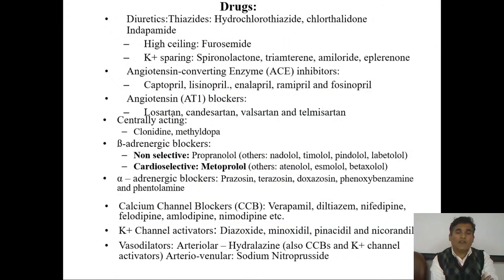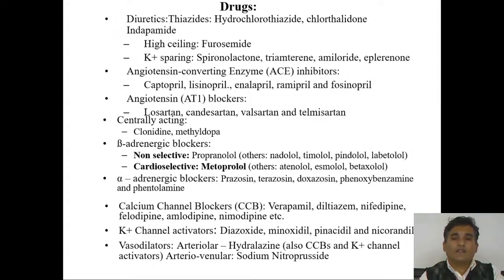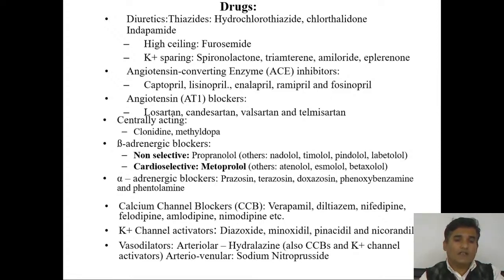Classification of antihypertensive drugs: Diuretics — thiazides (hydrochlorothiazide, chlorthalidone, indapamide), high-ceiling diuretics (furosemide), potassium-sparing diuretics (spironolactone, triamterene, amiloride). ACE inhibitors — captopril, enalapril, lisinopril, ramipril, fosinopril. Angiotensin receptor blockers — losartan, candesartan, valsartan, telmisartan. Centrally acting drugs — clonidine, methyldopa. Beta blockers — non-selective (propranolol, nadolol, timolol, pindolol, labetalol) and cardioselective (atenolol, esmolol, betaxolol). Alpha blockers — prazosin, terazosin, doxazosin, phentolamine, phenoxybenzamine. Calcium channel blockers — verapamil, diltiazem, nifedipine, felodipine, amlodipine. Potassium channel openers — diazoxide, minoxidil. Vasodilators — hydralazine and sodium nitroprusside.